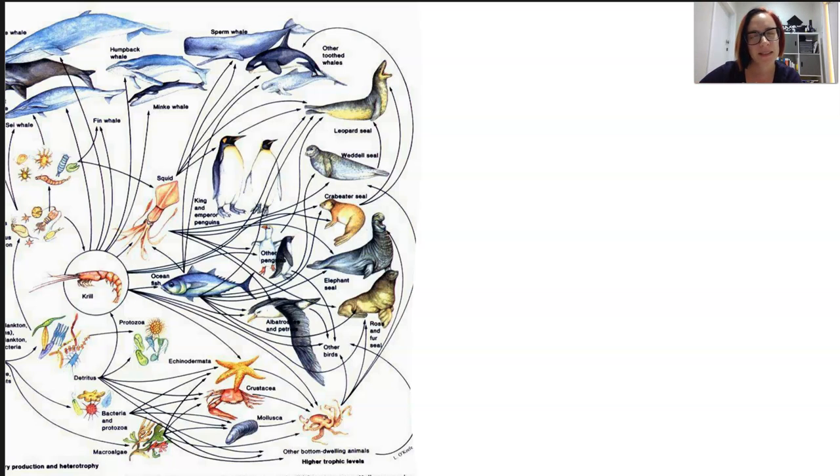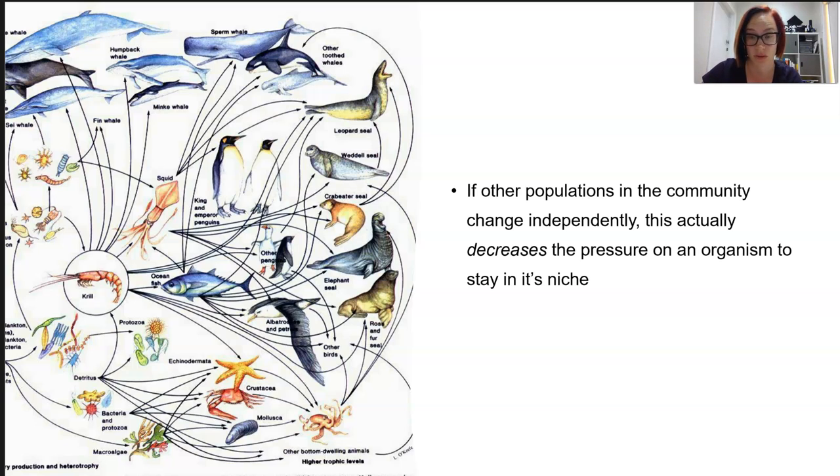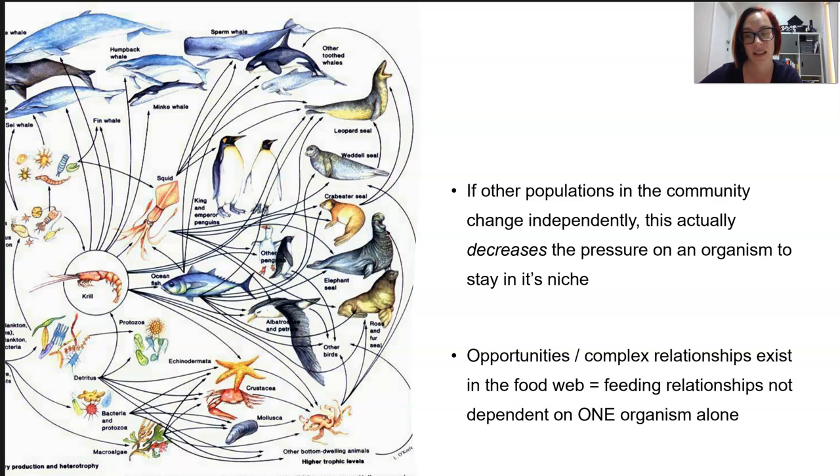Now, when other species populations increase and decrease in a community independently, they're doing it on their own, we actually decrease the pressure for any one organism to stay in its niche and do its role. This is because we're allowing other organisms to be part of the complex food web and we're providing more opportunities for others to participate in the interactions occurring in the habitat. It means that the stability of the food web is not dependent on any one organism alone.